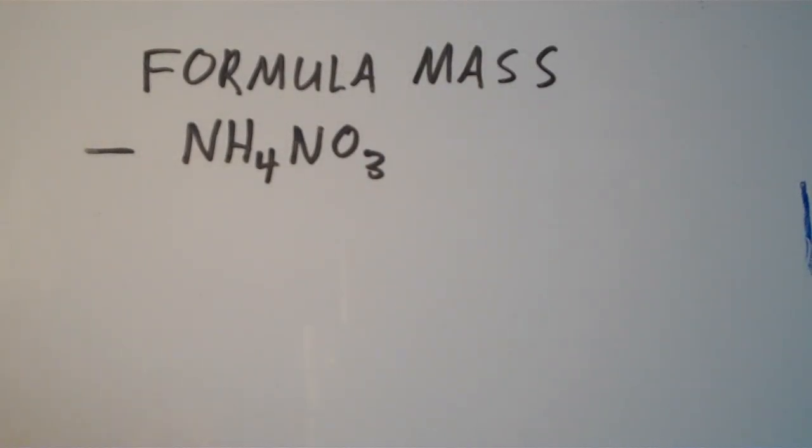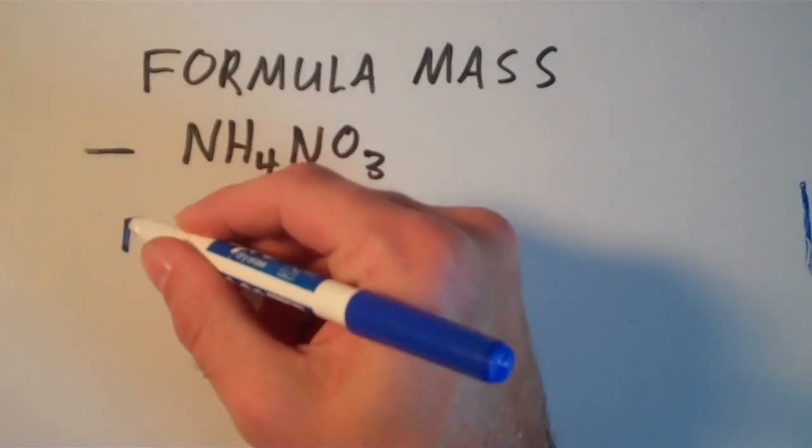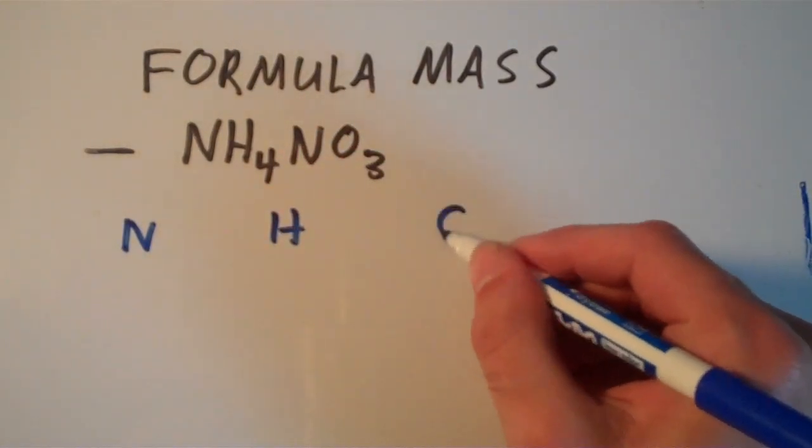So to get the formula mass of this thing, all we have to do is just add up the atomic masses of every atom in here. So the way that we do that is we have nitrogen, we have hydrogen, and we have oxygen.